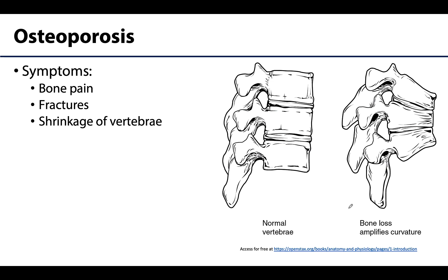Osteoporosis can affect the entire skeleton, but certain bones are more likely to fracture due to higher concentrations of spongy bone — such as the vertebrae, carpal bones, and the ends of the femur, particularly the proximal end. With severe osteoporosis you can sometimes see shrinkage of the vertebrae causing increased curvature. The vertebral bodies are almost completely composed of spongy bone, so fractures or multiple fractures within that spongy bone lead to a mini collapse of these bones, increasing curvature and causing height loss over time.